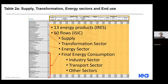Jumping to table 2A: it is definitely the largest table, with 13 energy products listed across the top and 60 flows. Regarding energy product definitions, we follow the international recommendations on energy statistics — IRES. Most products are reported in terajoules on a net calorific basis, except for charcoal and liquid biofuels, which are reported in kilotons. The rows are broken up into supply, transformation, energy sector, and final energy consumption. Final energy consumption is then divided into industry, transport, and other sectors including residential, agriculture, and so on.